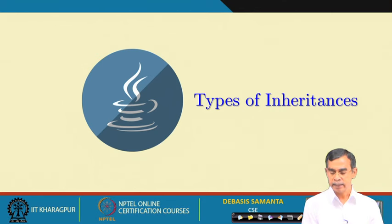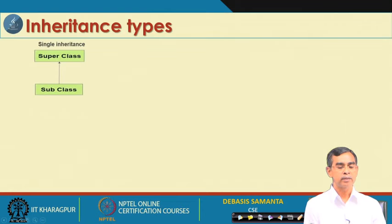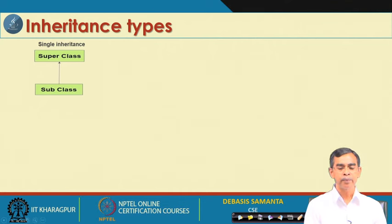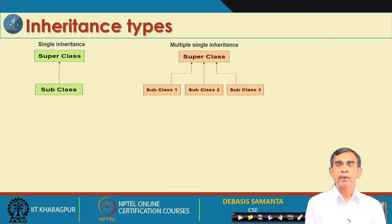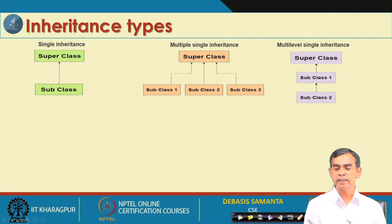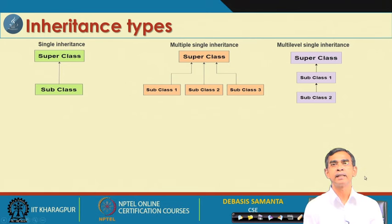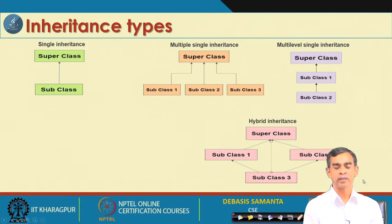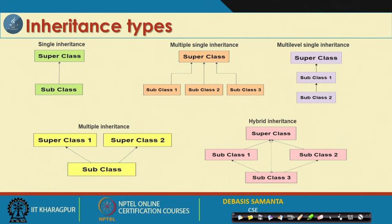There are different types of inheritance possible in Java. Single inheritance is where a subclass is derived from one superclass. Multiple single inheritance is where more than one class can be derived from the same superclass — subclass1, subclass2, and subclass3 all derived from the same superclass. And multi-level single inheritance is where a subclass is derived from another subclass, creating a chain.